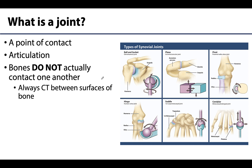Simply put, a joint is a point of contact between two bones, or a bone and cartilage, or even a bone and a tooth. You will often hear joints also referred to as an articulation. I myself am quite partial to the term articulation — you will definitely hear me say that. Occasionally, you'll also hear the term arthrosis as another term for a joint.